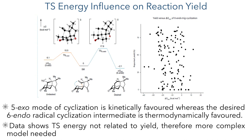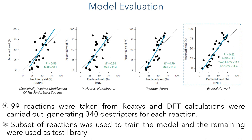To do this, they took 99 reactions from Reaxys and carried out DFT calculations to generate 340 descriptors for each one. These descriptors include parameters such as orbital energy, charge distribution, and steric effects. They used a subset of these reactions to train the model and then the remainder were used as a test library where the reported yield was compared to that generated by the model. From this, they determined that the neural network model was the most effective at predicting reaction yield, showing an R-squared correlation of 0.82 between the predicted and reported yields.